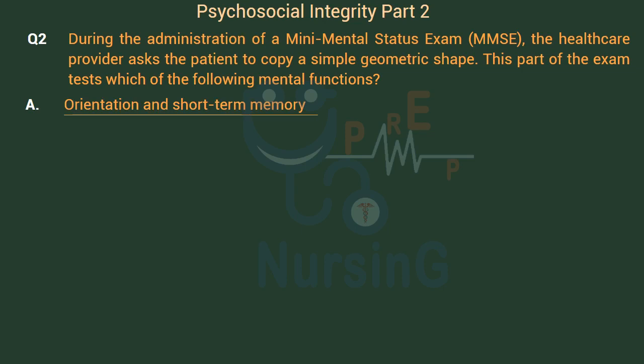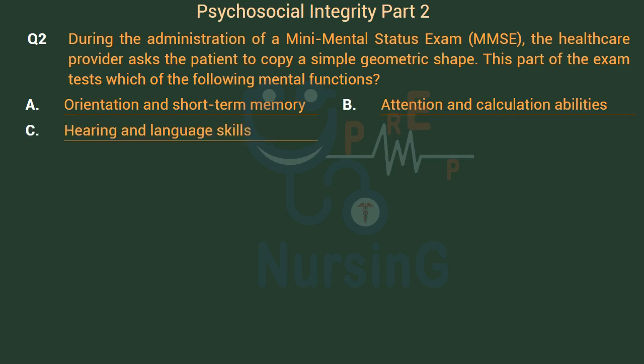Option A: Orientation and Short-Term Memory. Option B: Attention and Calculation Abilities. Option C: Hearing and Language Skills. Option D: Visual Comprehension and Praxis.